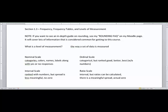So we're going to start off with a nominal scale. A nominal scale is based on categories, colors, names, labels, along with yes or no. So a nominal scale is categorical.